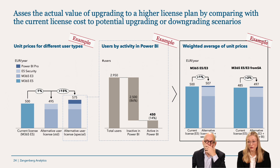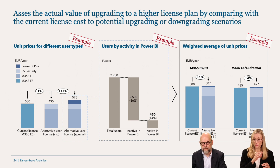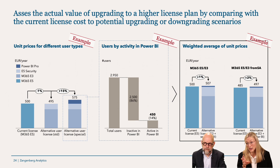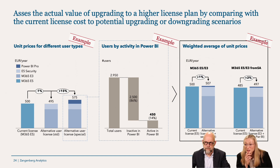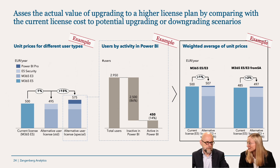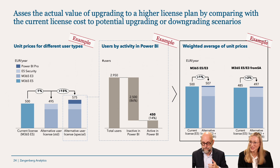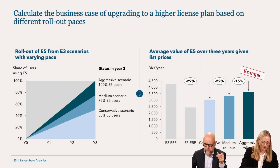You need to assess the real value of upgrading — whether you go to the full E5 or upgrade in bits. Looking at the weighted average unit prices: if you purchase a combination of E3, E5 Security, and Power BI Pro, it can actually be more expensive than just purchasing the full E5. This is a known Microsoft strategy — buying in bits costs more, just like ordering a burger, fries, and Coke separately costs more than the meal deal.